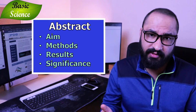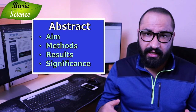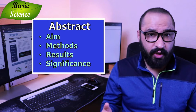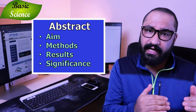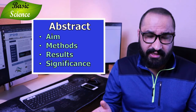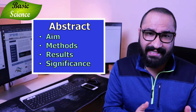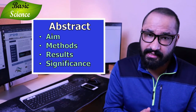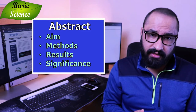You have to be very careful while designing your abstract because your abstract is going to reflect your research article. The important part is you should first divide your abstract into sections: the first section is aim, the second section is the main methods, the third section is results, and the fourth section is significance.